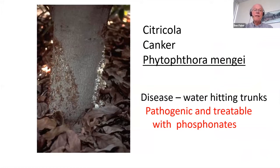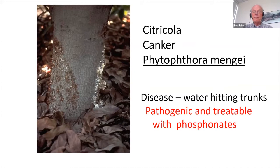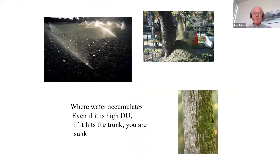We have other Phytophthoras, and these are water-related. They cause trunk cankers where water actually hits the trunk. Having mulch up against the tree trunk creates a wet environment which would lead to Phytophthora, so mulch against the trunk is not a good idea. Phytophthora mengii — formerly called Phytophthora citricola — is treatable with phosphonates as well, but you have to get the phosphorous acid right on those cankers for it to work. Water getting on trunks creates this environment because Phytophthoras love water — they love to float and swim in it.